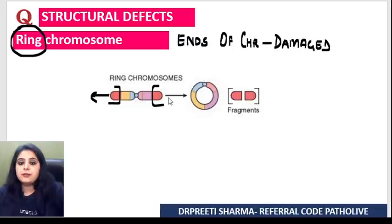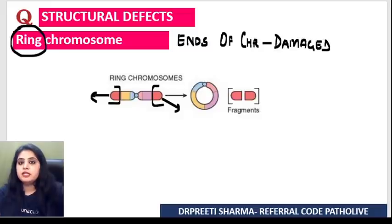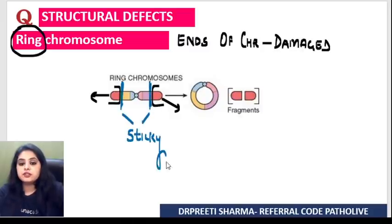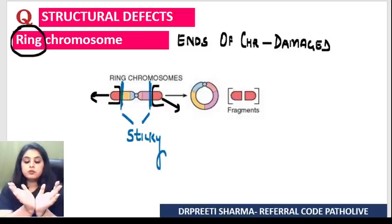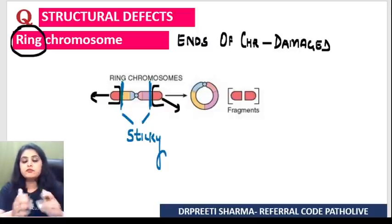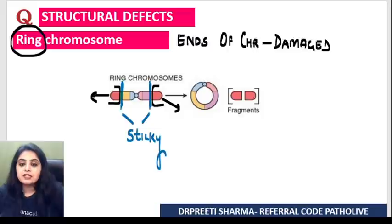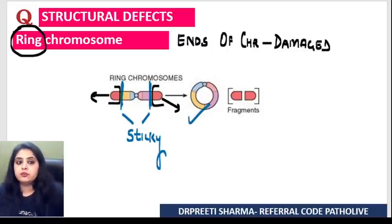Imagine this end got damaged and this end got damaged. Whatever has been damaged — the remaining part — these ends become very sticky and stick to each other. The chromosome folds, those sticky ends fold, and that results in the formation of a ring chromosome.